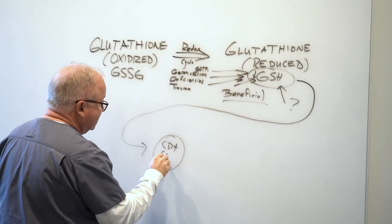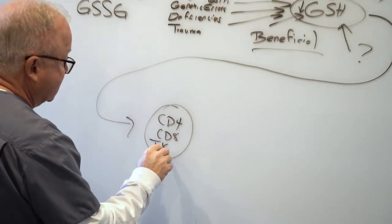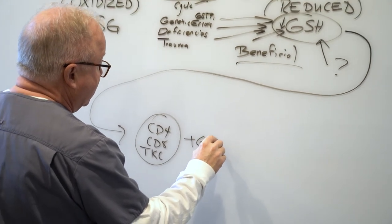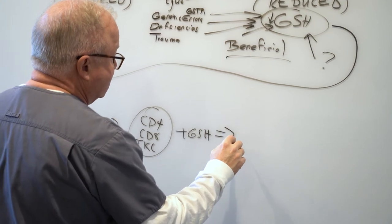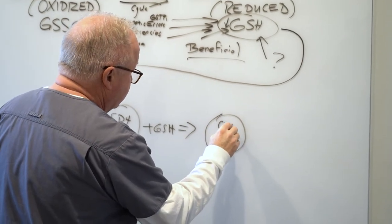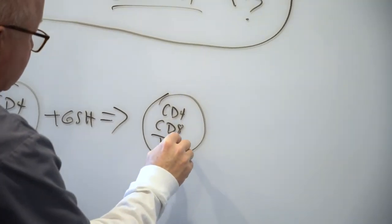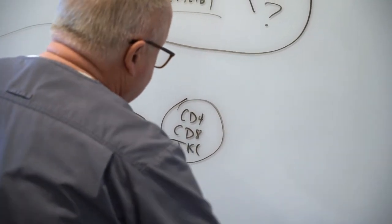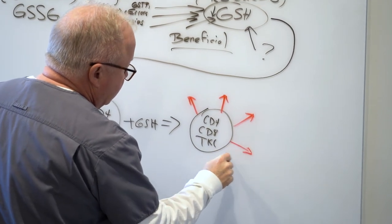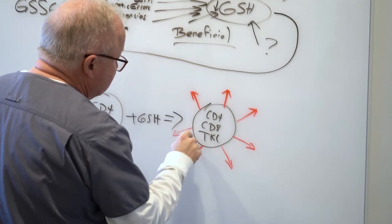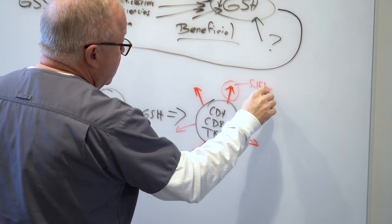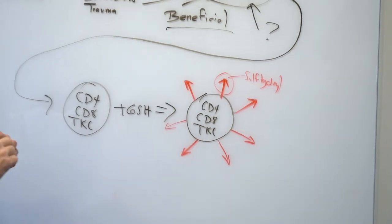CD4 and CD8 T killer cells are the hunter-seeker destroyers in our body. They need reduced glutathione. When you do that, when you give them reduced glutathione, you get this: CD4, CD8, T killer cells armed with nuclear tipped weapons. This is the GSH molecule. This is the smelly sulfhydryl group on the tip. They cover themselves with glutathione like a porcupine does quills.